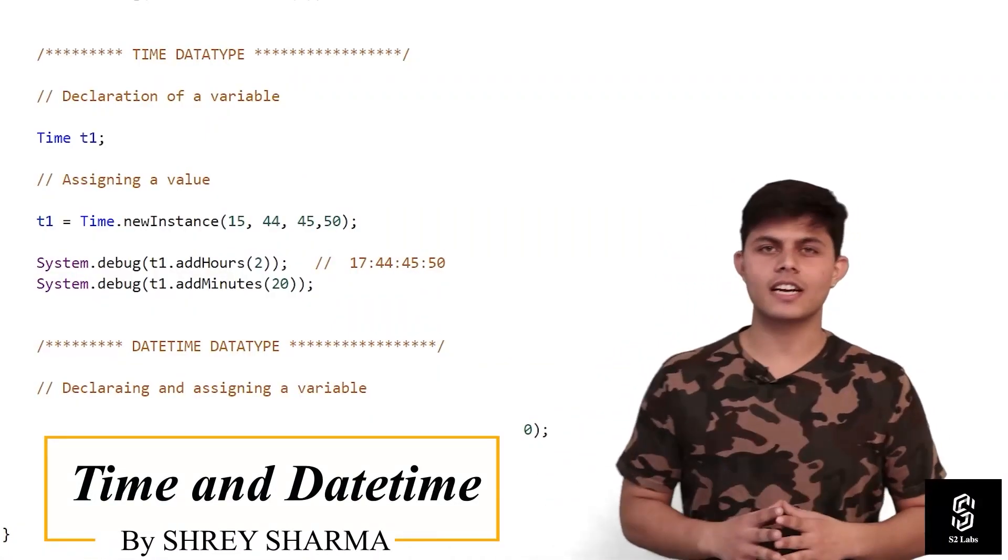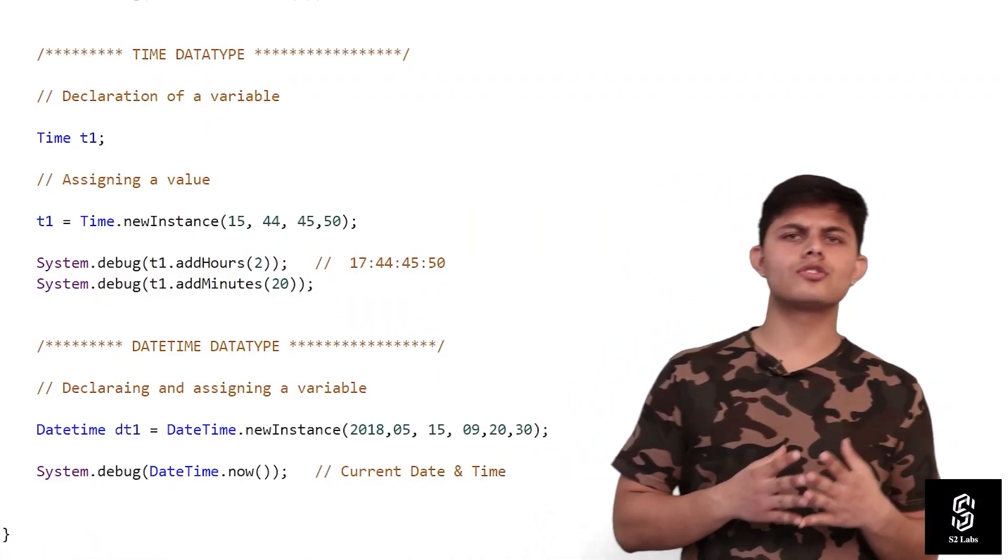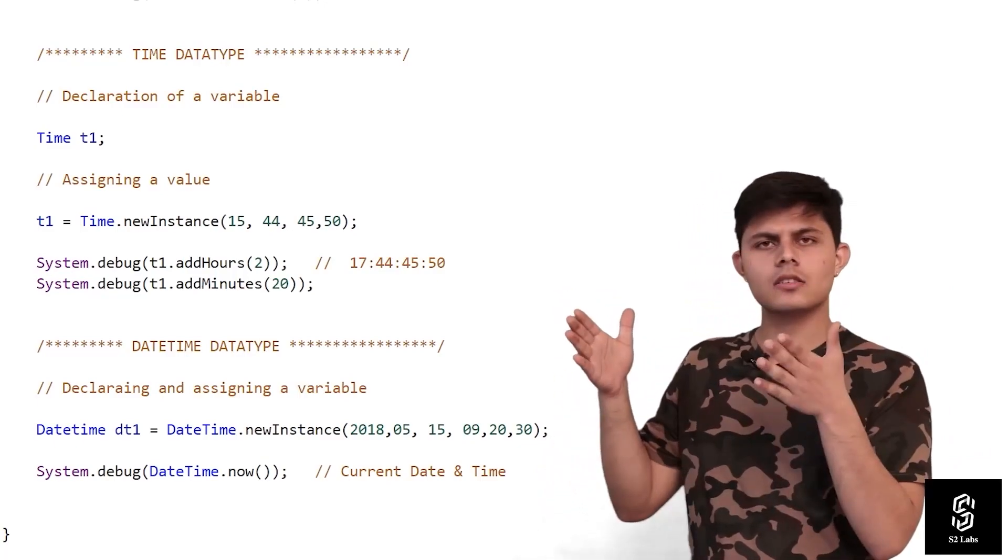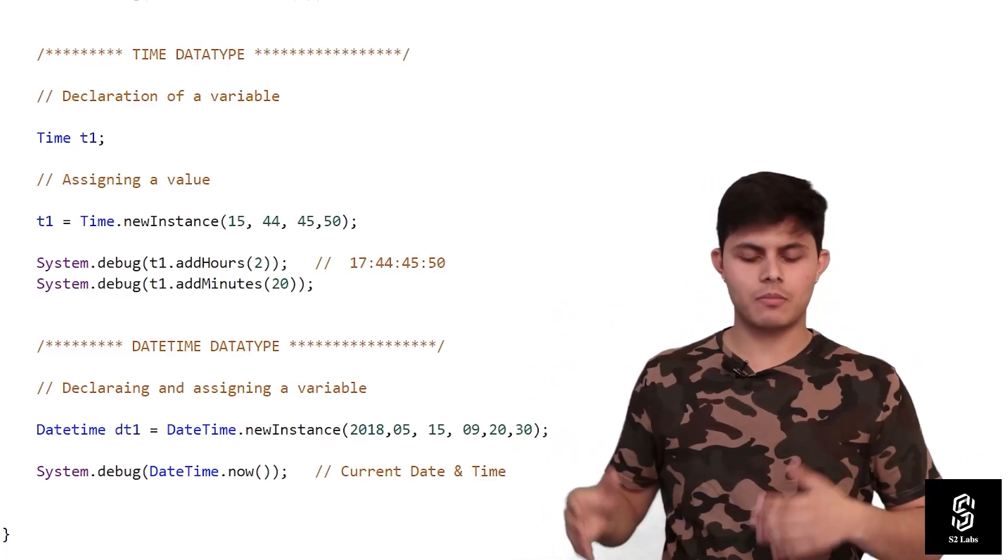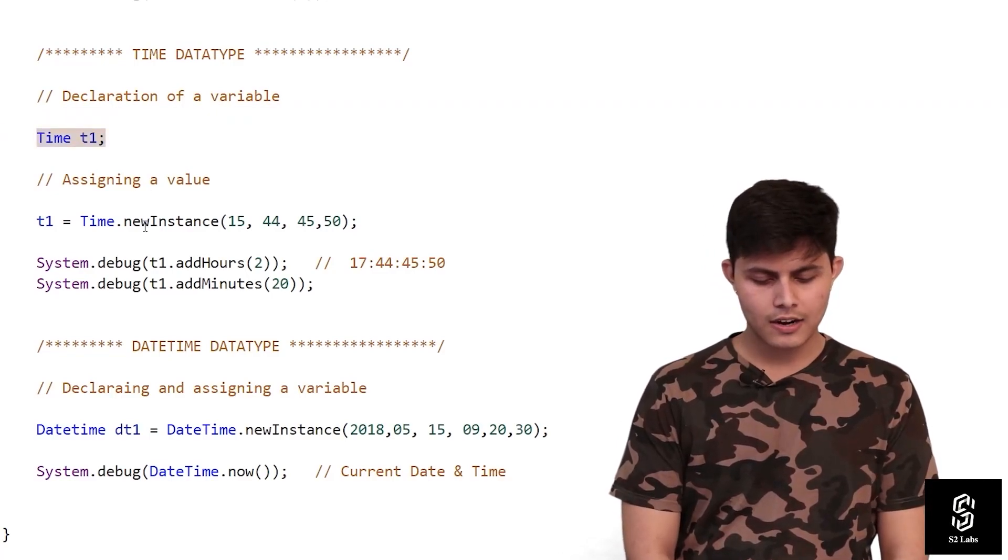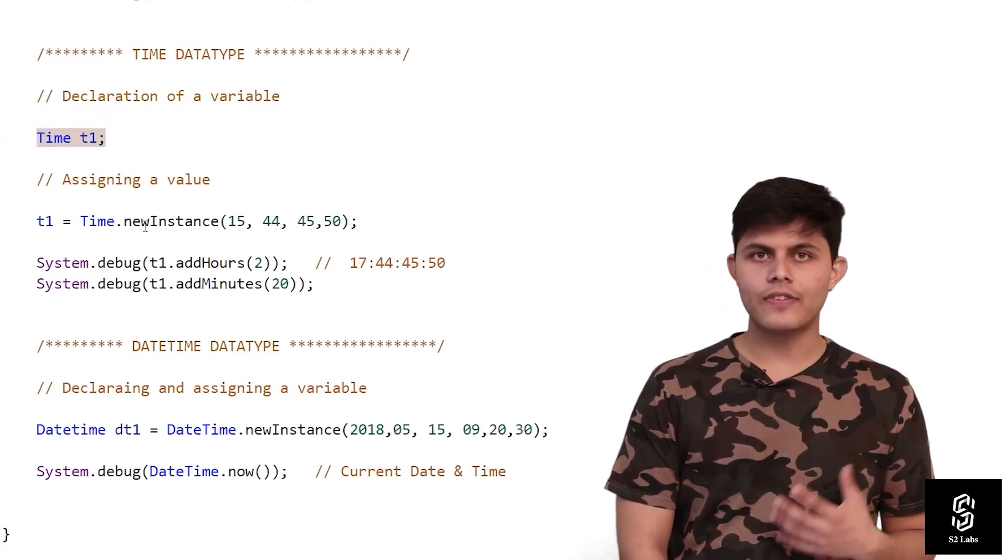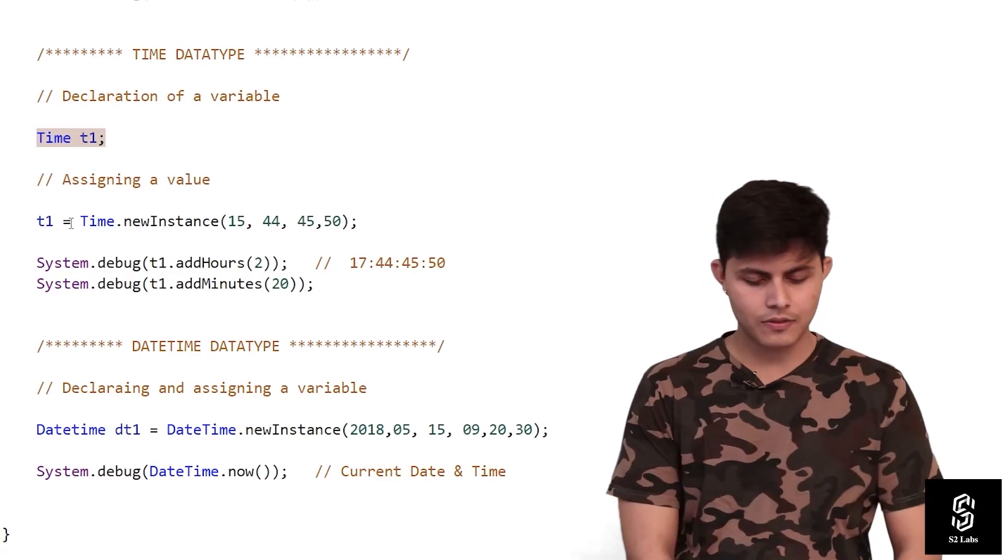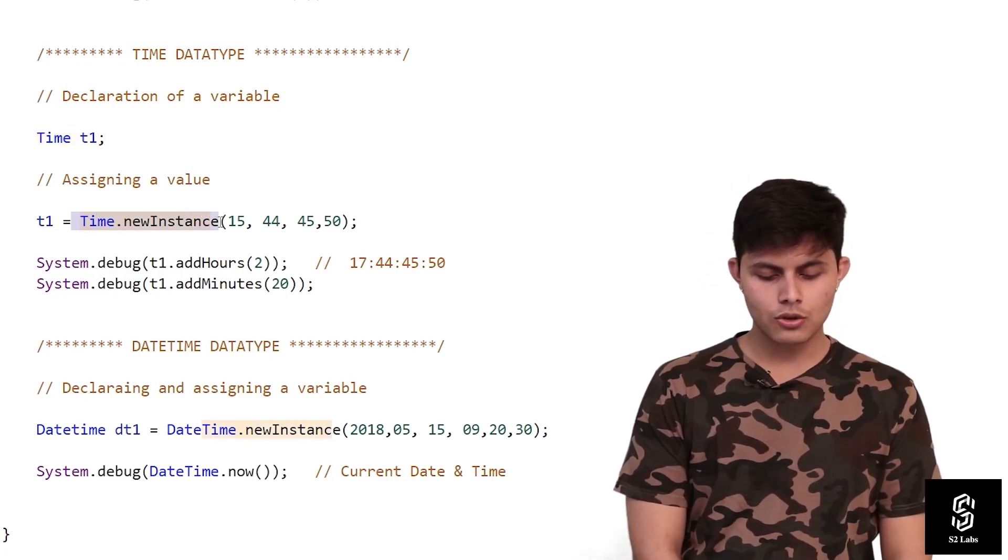Now let's talk about the Time data type, which is used to store time into an Apex variable. Here is a simple declaration of a Time variable. If you want to assign any value or time to this variable, we can use Time.newInstance().